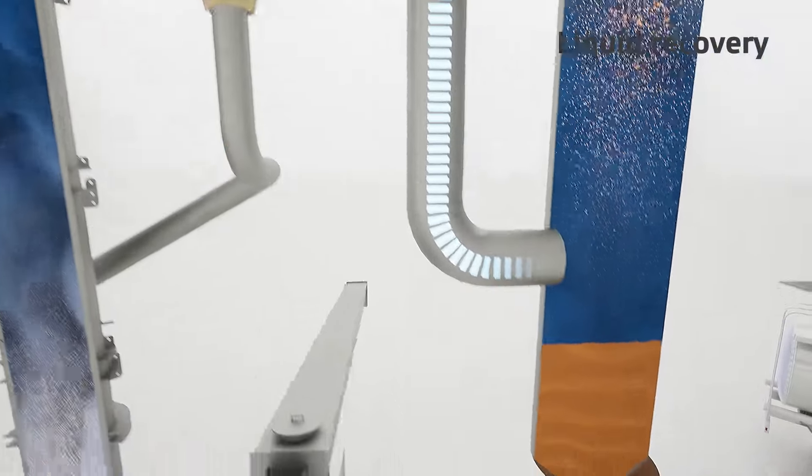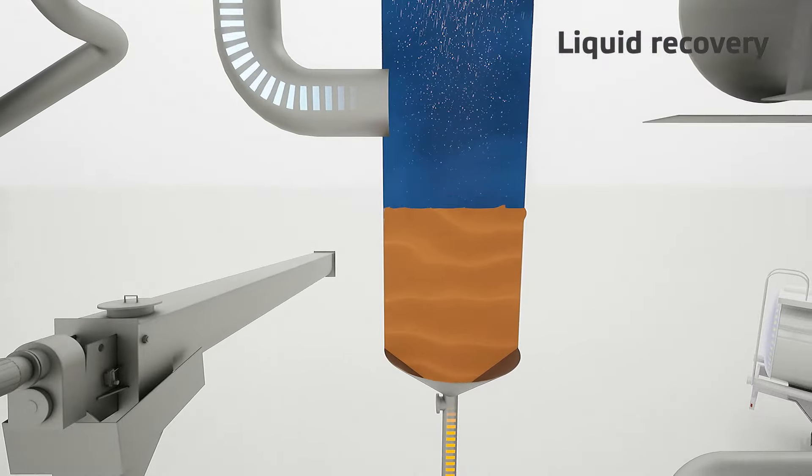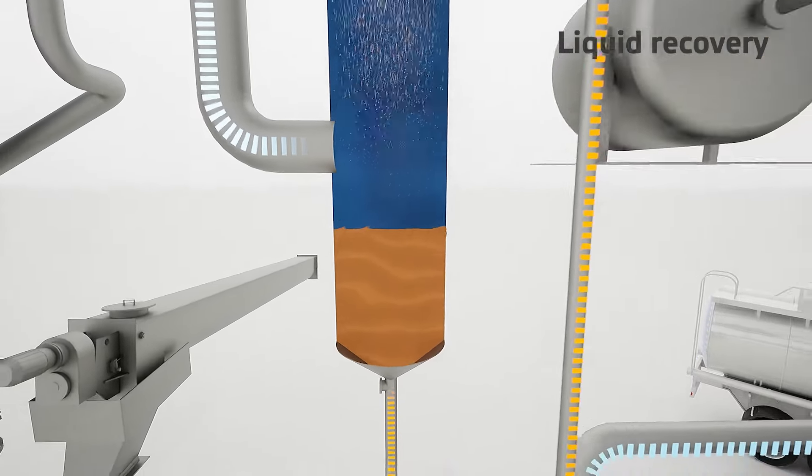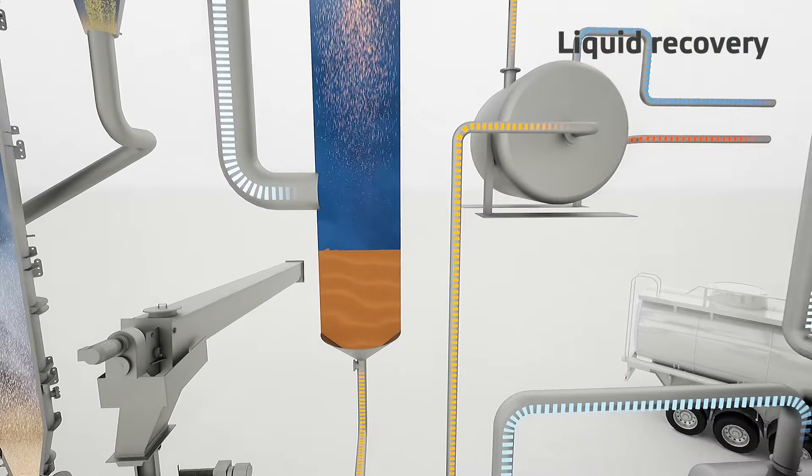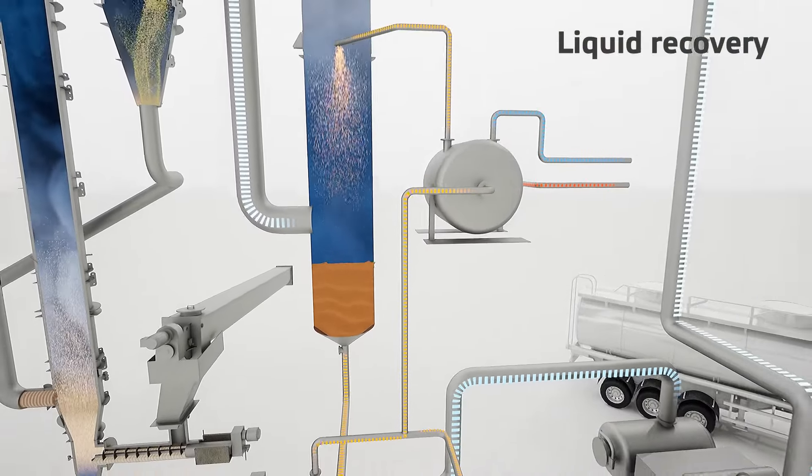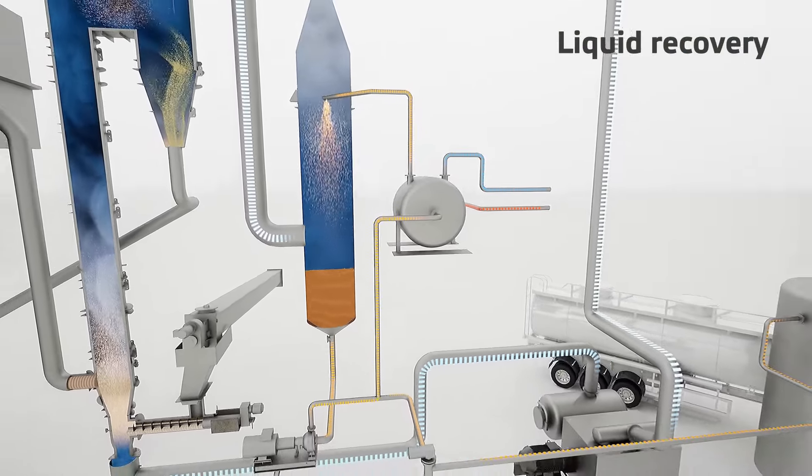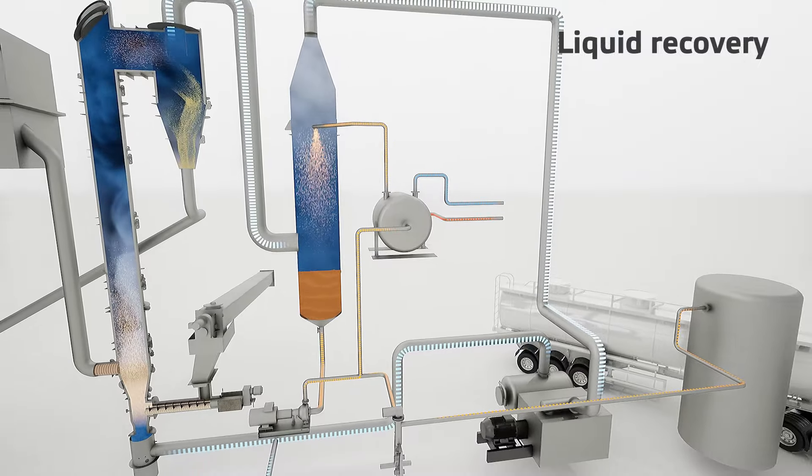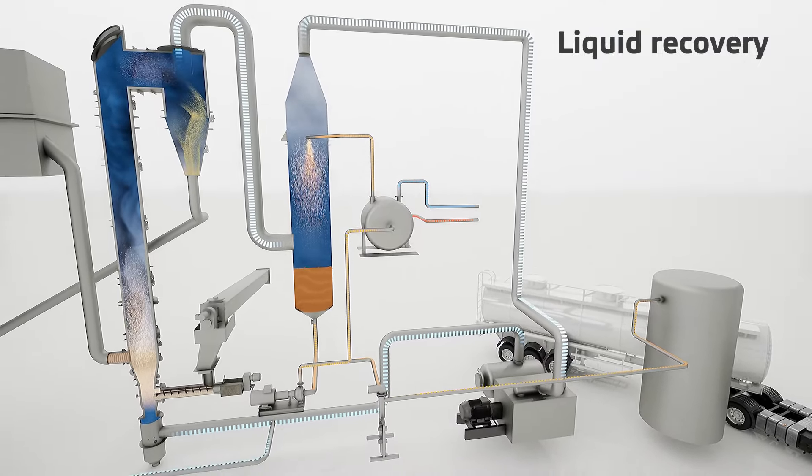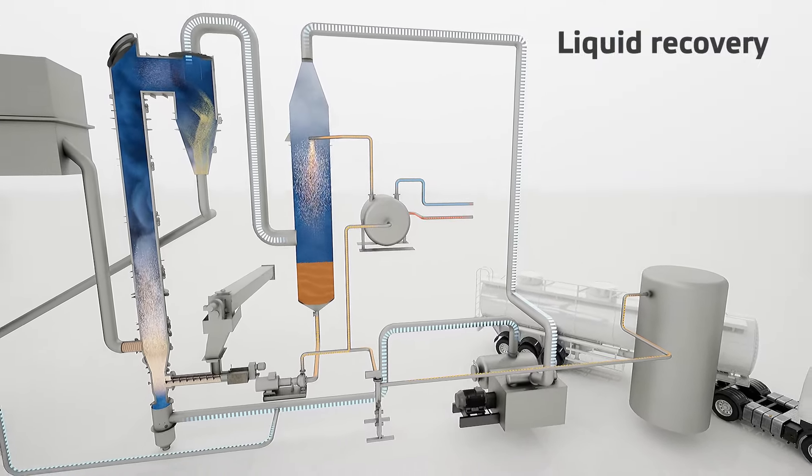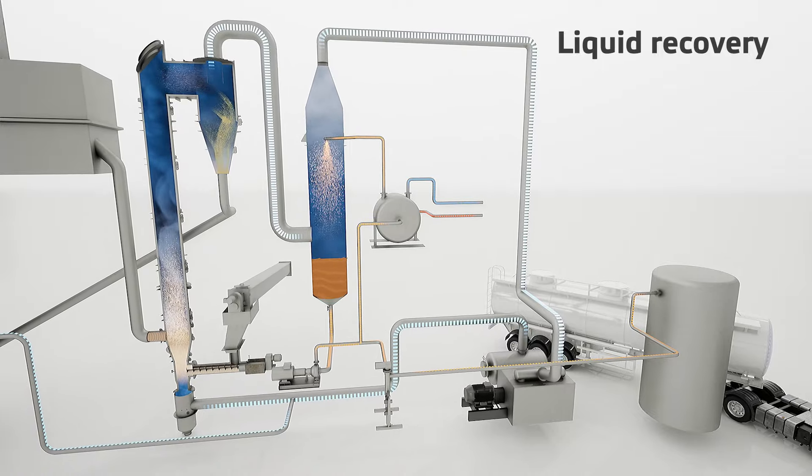The pyrolysis gases flow from the cyclone to the recovery unit where condensable components are turned into the liquid phase. Liquid recovery operates as a semi-closed circulation where part of the liquid is cooled and pumped back to the condenser. The pyrolysis liquid is filtered and pumped to the storage tank.